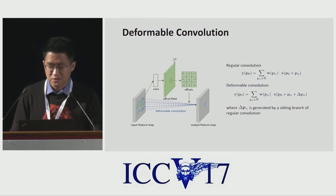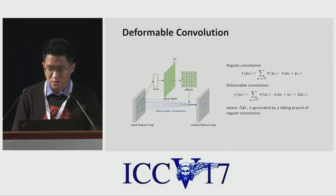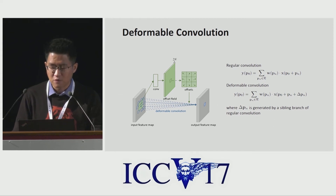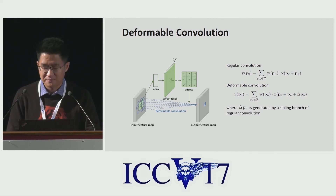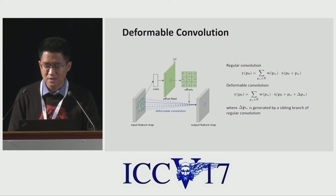The first is deformable convolution. It adds 2D offsets to the regular sampling locations in the standard convolution, enabling free-form deformation of the sampling grid, as illustrated in the figure here. The offsets are learned from the preceding feature maps via additional convolutional layers. Thus, the deformation is conditioned on the input features in a local, dense, and adaptive manner.